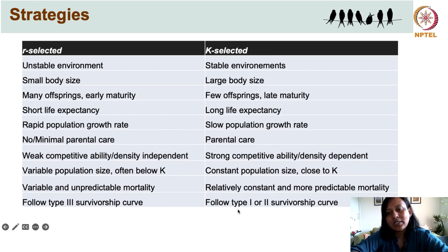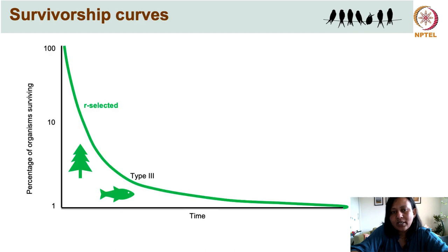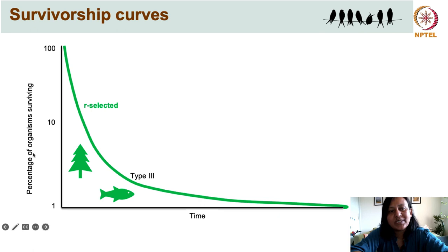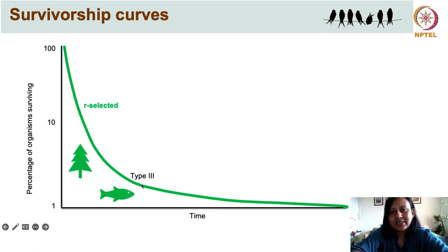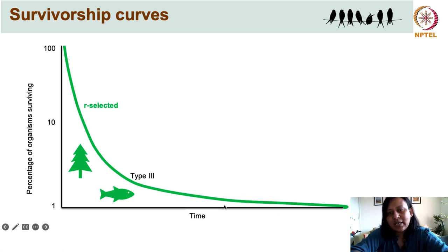K-selected species typically maintain stable population sizes close to the environmental carrying capacity. Mortality in these species is relatively constant and more predictable, and they typically follow type 1 or type 2 survivorship curves. Survivorship curves are graphical representations of the percentage of organisms that survive at different ages. R-selected species show the type 3 survivorship curve, characterized by high mortality in early ages, which then becomes more stable toward the end of life.